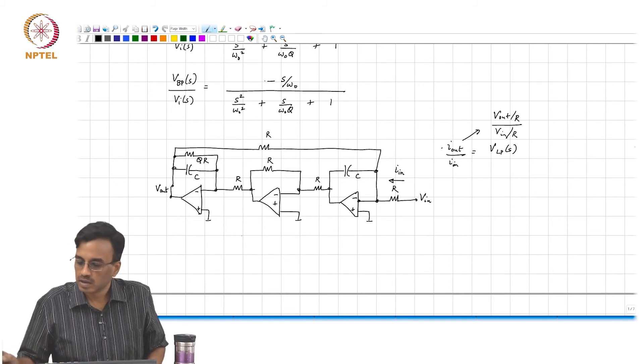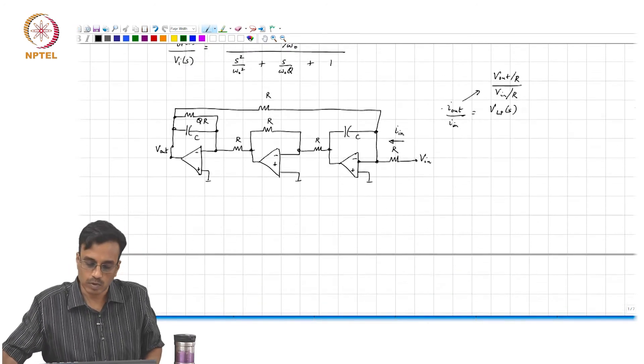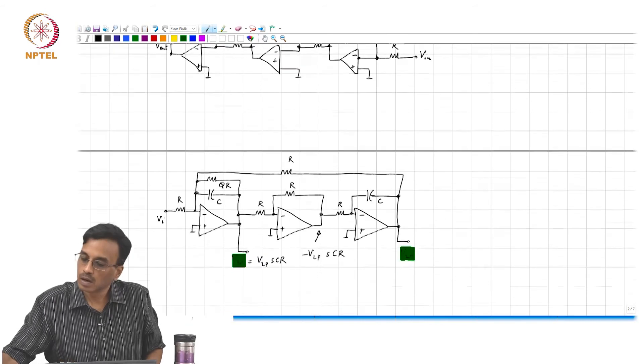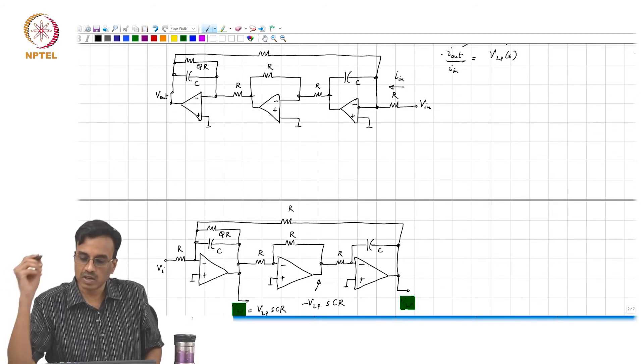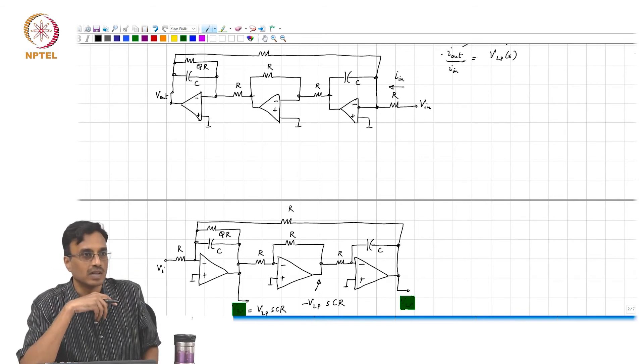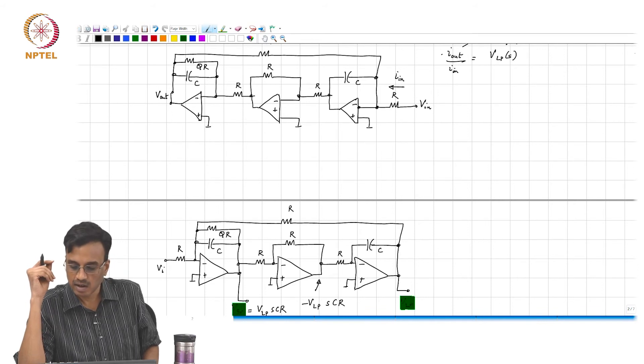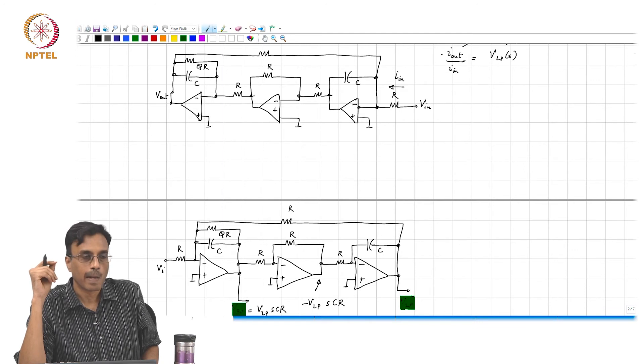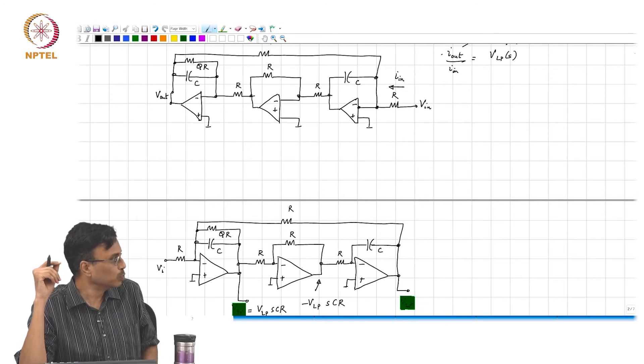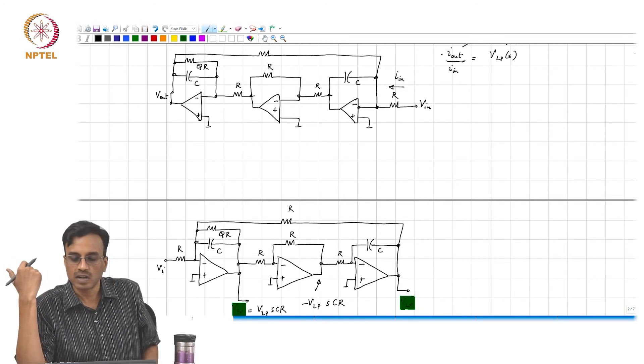Staring at this picture and this picture, apart from the obvious difference of signal flowing from left to right and right to left, what else can we conclude? What is the difference between the two pictures? Both of them have the same transfer function, correct? What is the difference between the two?